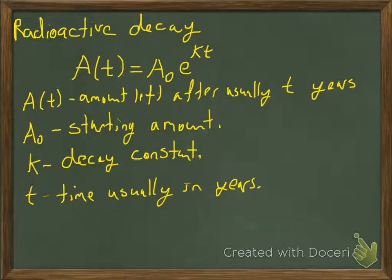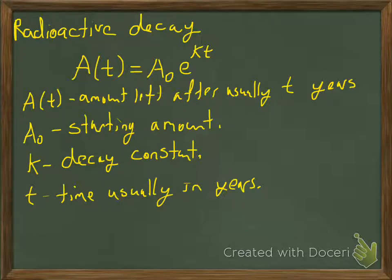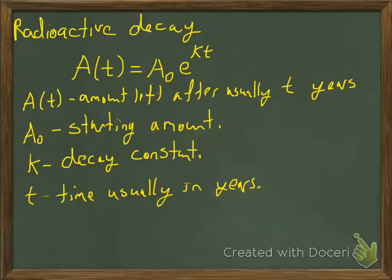We're going to use the same formula: A(t) = A₀e^(kt). A(t) stands for how much we have left after a certain amount of time. Radioactive decay is often measured in years, sometimes days or hours depending on the scenario. A₀ is the starting amount, k is the decay constant — kind of like your interest rate — and t is time.